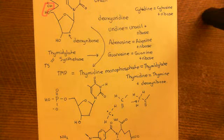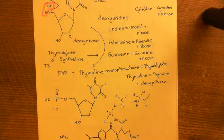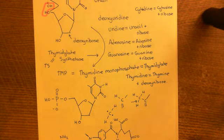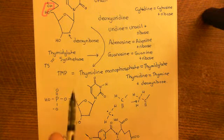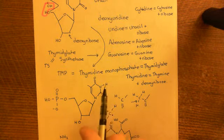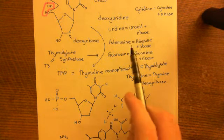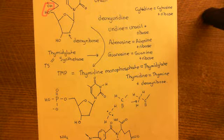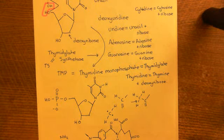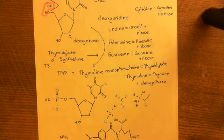Methotrexate blocks the production of tetrahydrofolate by competitively inhibiting dihydrofolate reductase, and tetrahydrofolate is extremely important in the production of thymidine monophosphate, but it's also important in the production of guanosine and adenosine — the purine organic bases. We'll see you for the next video.